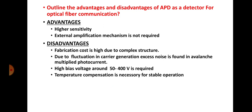The main advantages of the avalanche photodiode are that it is highly sensitive and no external amplification mechanism is required, unlike the PIN photodiode, because amplification takes place inside the APD itself due to the avalanche multiplication process. The disadvantages are: the fabrication cost is high due to the complex structure; excess noise is present in the avalanche-multiplied photocurrent due to fluctuations in carrier generation; a high bias voltage in the range of 50 to 400 volts is required; and temperature compensation is necessary for stable operation since the chain reaction may cause temperature rise.